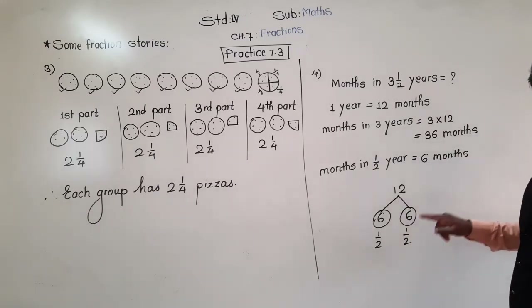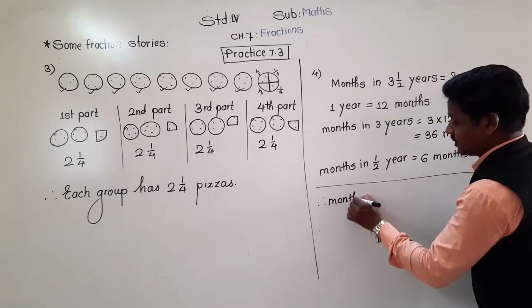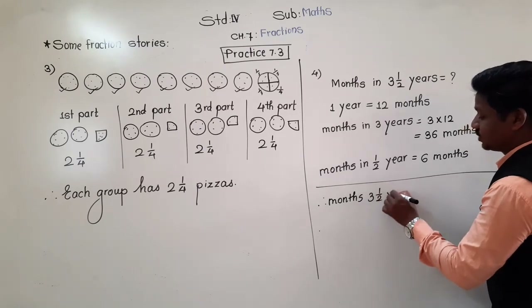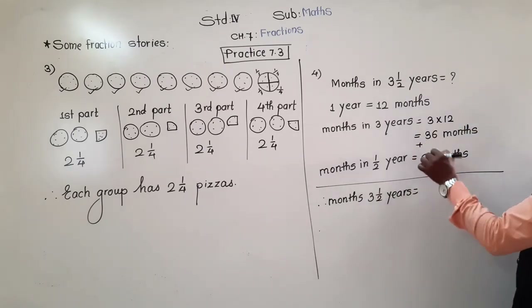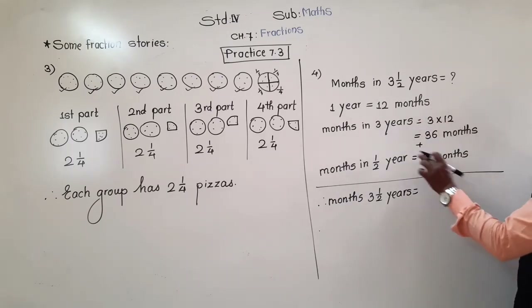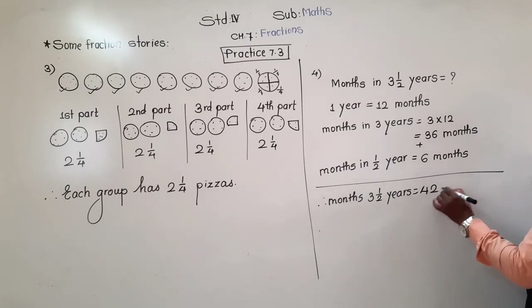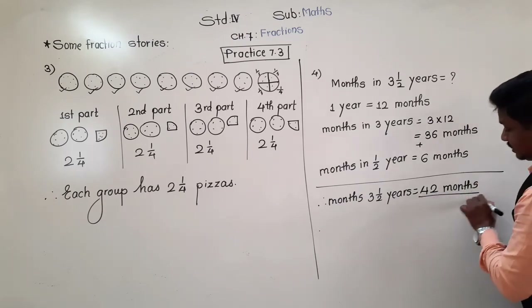Total months in three and a half years: 36 months (for 3 years) plus 6 months (for half a year) equals 42 months. So the answer is 42 months.